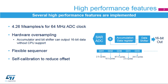The ADC includes oversampling hardware which accumulates data and then divides without CPU help. The oversampler can accommodate from 2 to 256 times samples and right-shift from 1 to 8 binary digits. The sequencer allows the user to convert up to 16 channels in any desired order, and each channel can have a different sampling period.